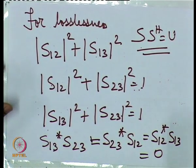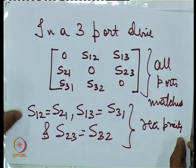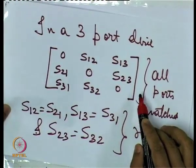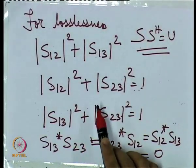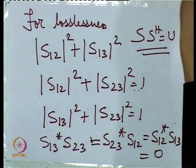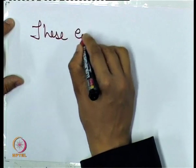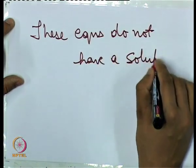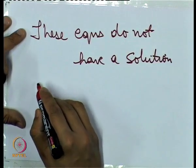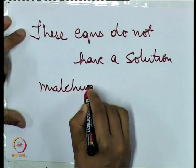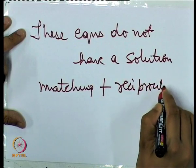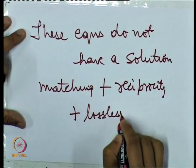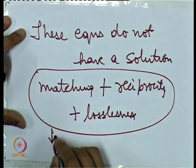Now the problem with these two sets of equations — one for all ports matched, one for reciprocity, and one for losslessness — is that they do not have any solution. So these equations do not have any solution. Therefore, we cannot have all three properties simultaneously: matching plus reciprocity plus losslessness cannot all be achieved together.